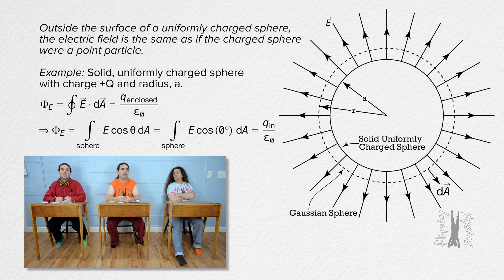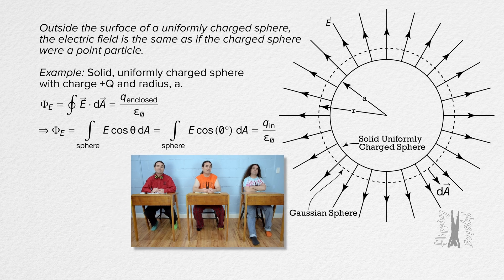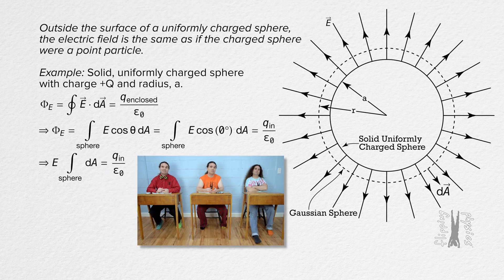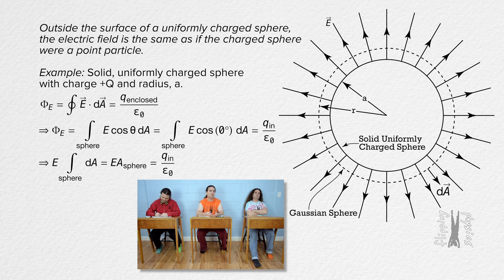The electric field is constant over the entire Gaussian sphere so we can take that out from the integral. The integral of dA over the Gaussian sphere is just the area of the Gaussian sphere. The surface area of the Gaussian sphere equals 4 pi times the square of the radius of the Gaussian sphere which is lowercase r.